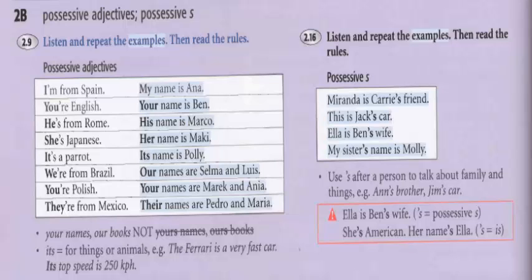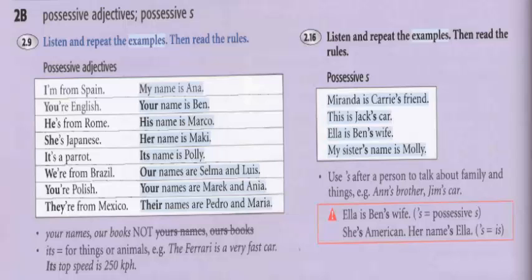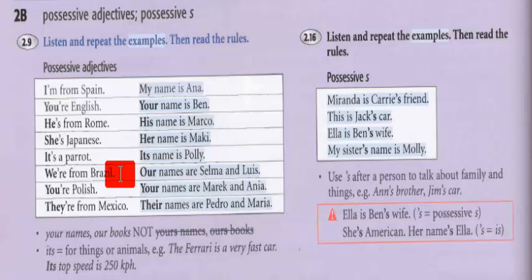Bom, essa aulinha foi bem basic, bem easy. Agora, mais para frente, nós vamos aprender o possessive de uma outra maneira. Mas por enquanto, nós vamos ficar apenas com essa list dos possessive adjectives. Possessive adjectives têm que estar sempre acompanhados de um noun, de um substantivo que pertence a você. Se você vai dizer 'a minha casa' — my house. Mas se eu quero dizer, por exemplo, 'a casa da minha amiga,' então eu posso substituir amiga pelo pronome her — pelo possessive her — e aí eu digo her house. Se eu quero dizer 'nossa aula,' então eu digo our class. Review, study, qualquer dúvida, ask your teacher. See ya!